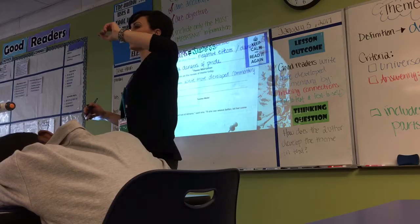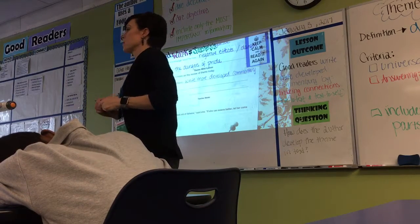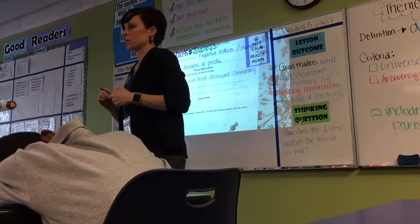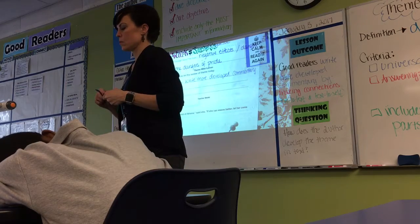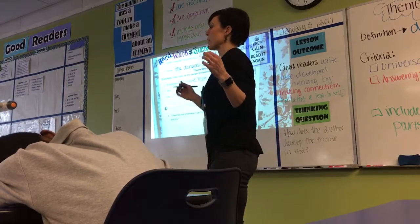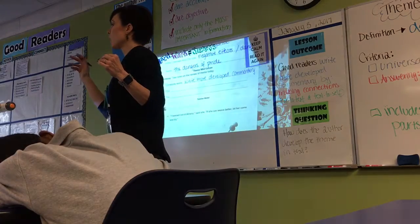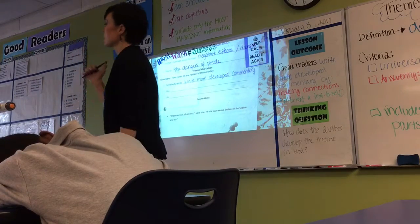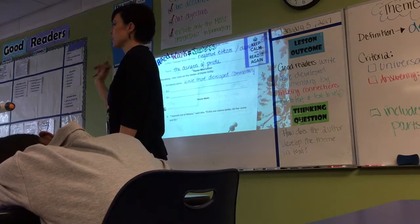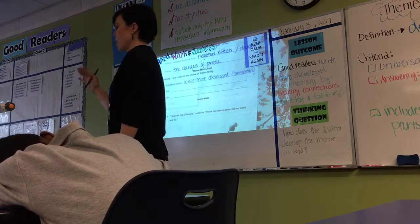So, write that down, and then I'm going to cold call on someone to tell me what our problem is. All right. Did someone help Caleb out? What should I be writing on my line? What has been holding us back from writing really good commentary? Kyrell? Not making connections. Good. What types of connections? Or connections between what? Because that's the important part. It's all important.